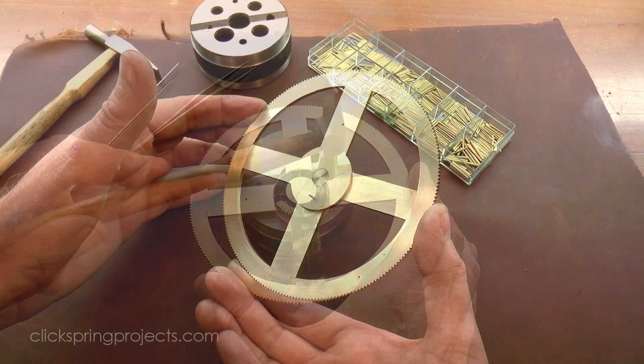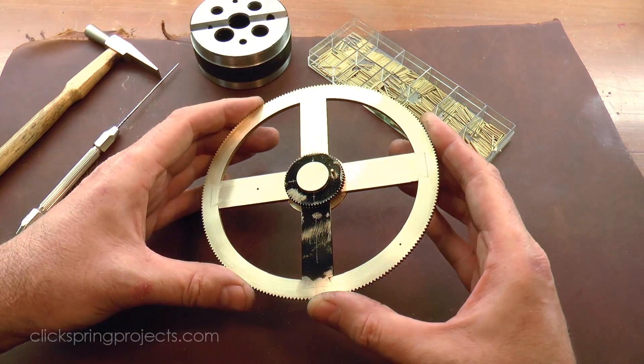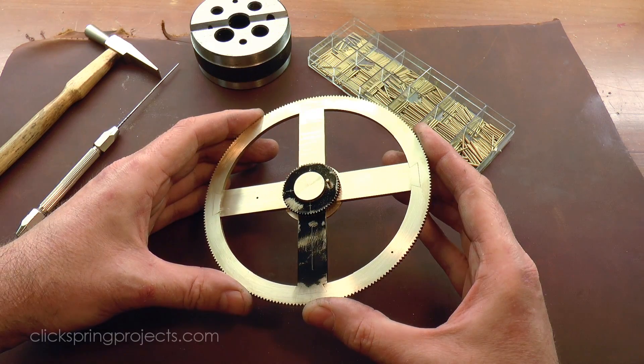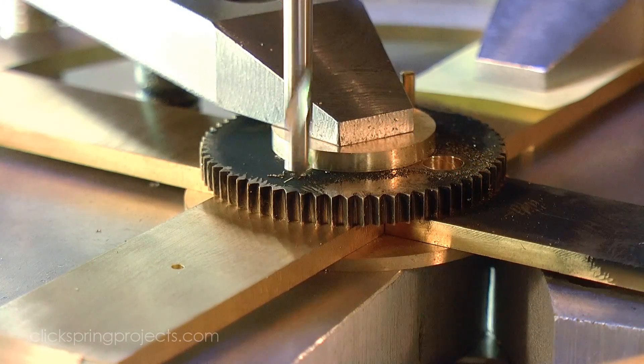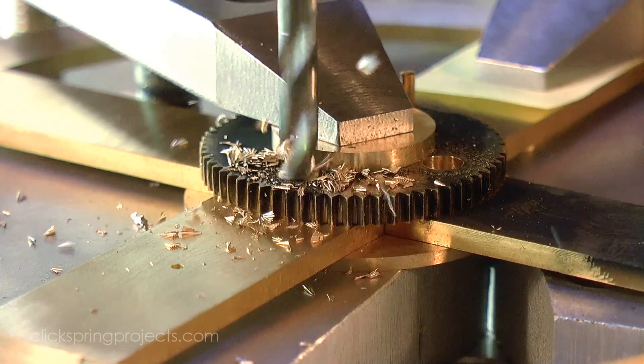The hole is taper broached, and then a pin with a matching taper is tapped into place. It gives a very precise and reliable lock, and the pin can easily be tapped out later in the process.